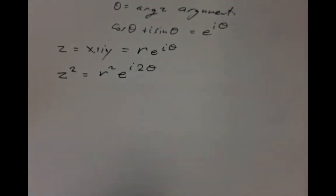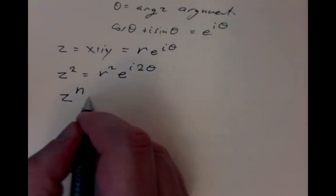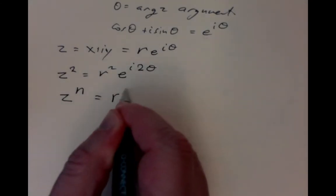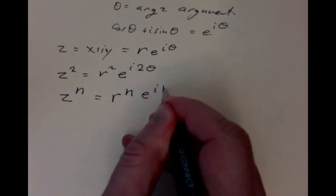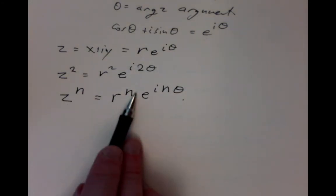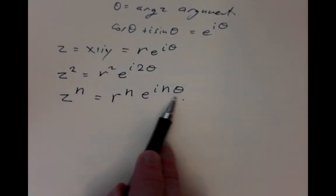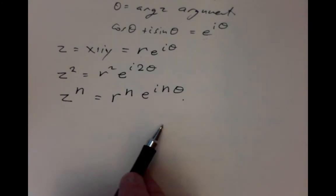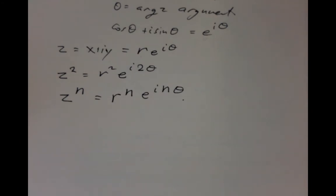We can apply that over and over again to very large numbers, some number n of times, and get r to the n times e to the i n theta. If you multiply this number by itself n times, the moduli multiply n times and the arguments add n times. That makes it possible to solve the equation where z to the n equals something.